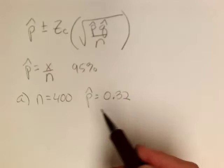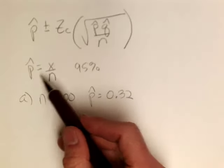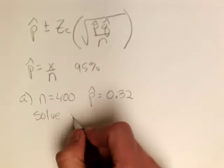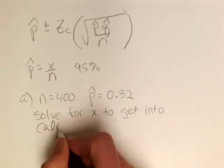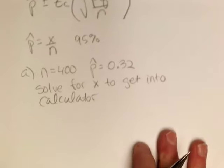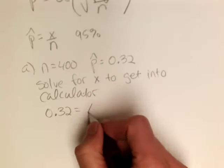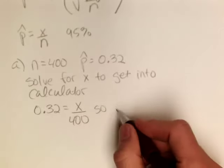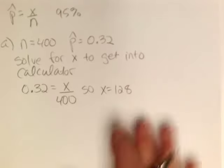Now, like I said, to get the information into the calculator, we don't need p-hat directly. What we need is x and we need n. So we're given n and we're given p-hat, so we're going to need to solve for x to get into calculator. And that's the same thing for StatCrunch. So if p-hat is equal to 0.32 and n is equal to 400, I can just solve this relationship here. So x is equal to, basically I'm taking 32% of 400. So x is equal to 128.